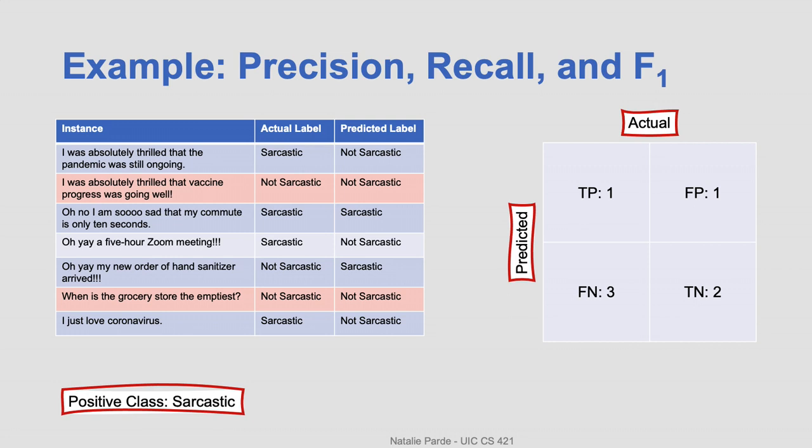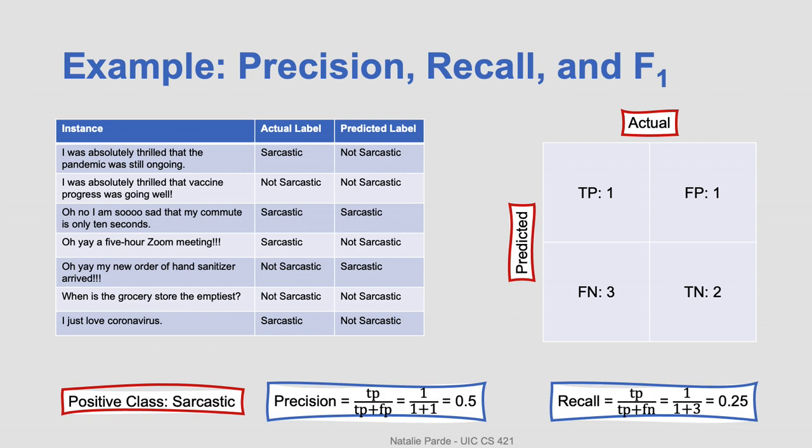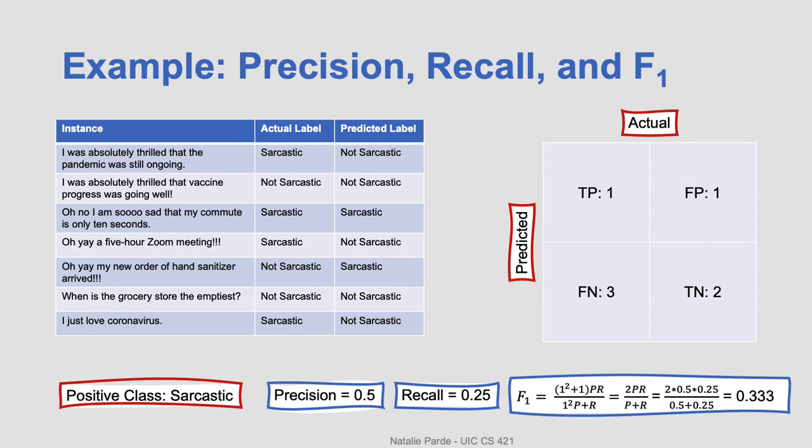Now that we have our filled out confusion matrix, we can go ahead and start computing our metrics. We'll do precision first. So remember that we just need to divide the true positives by the sum of true positives and false positives, giving us a precision of 0.5. And next we'll do recall. We divide the true positives by the sum of true positives and false negatives, giving us a recall of 0.25. Now that we have our precision and recall, we can compute F-one. For the numerator, we'll compute 2 times 0.5 times 0.25, and for the denominator, we'll compute 0.5 plus 0.25. This gives us an F1 of 0.333. So not the greatest sarcasm detector in the world, but that just means we have lots of room to improve.